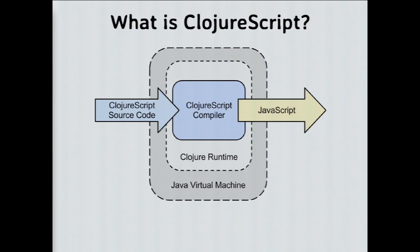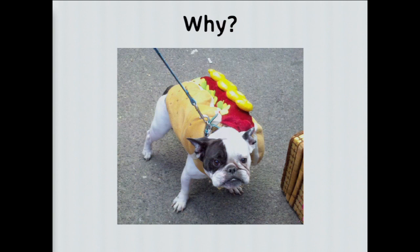That's all I'm going to tell you about Clojure — you're experts now. ClojureScript is a compiler, written in Clojure, that also runs on the JVM. It compiles ClojureScript — which is very similar to Clojure — into JavaScript. It takes ClojureScript source code as input and returns JavaScript source code as output. The rest of this talk is about why you would want to do this: why compile into JavaScript, why use Clojure, and why is this interesting?